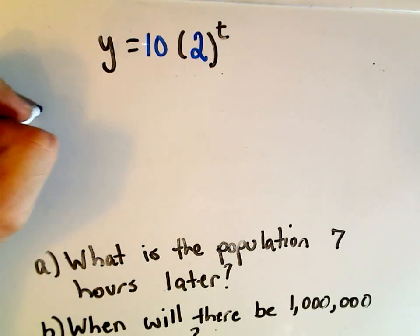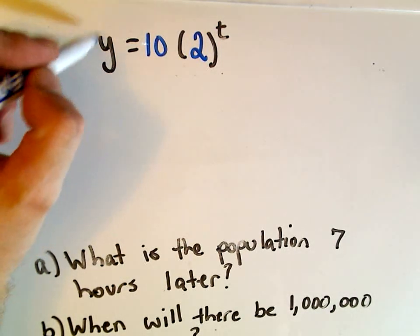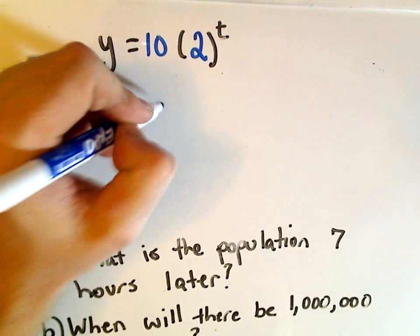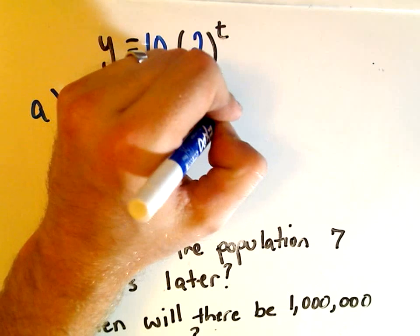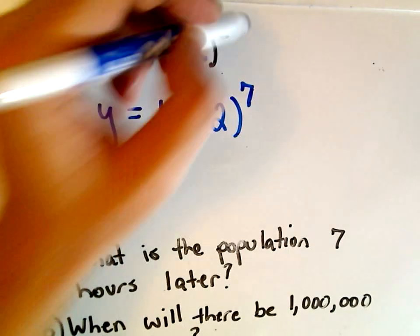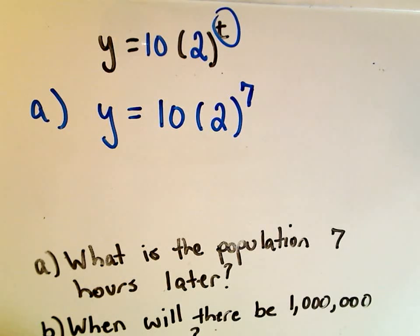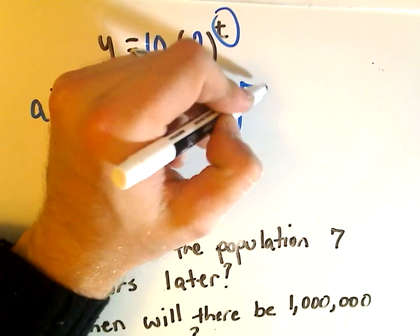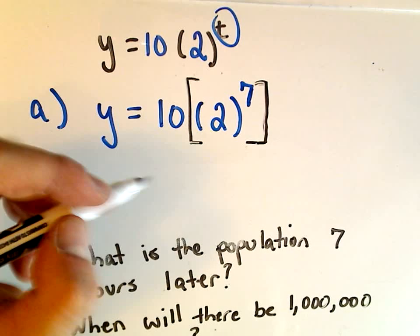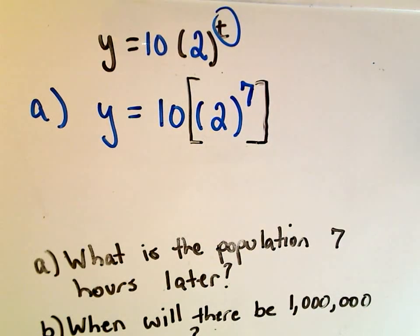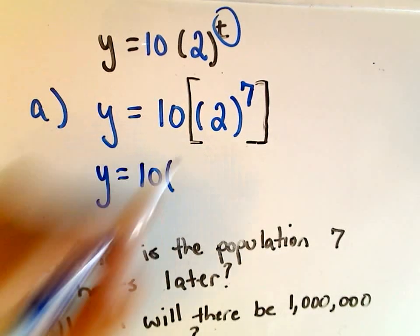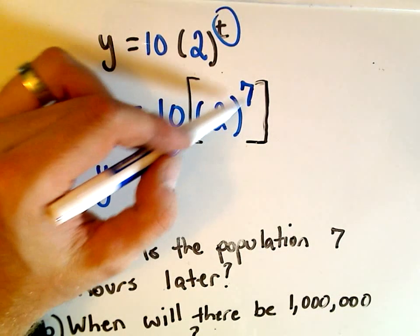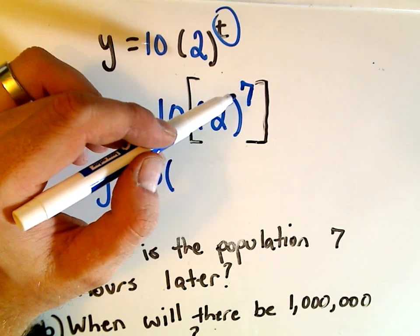So part a, it says what is the population seven hours later? Y represents the total amount seven hours later. Well I have to plug my t value in as a seven. Here's another place where people will sometimes make mistakes and you have to be careful not to do this. You have to remember your order of operations. Some people will make the mistake of multiplying the ten and the two, but remember that's not what you want to do. We have to take the value two raised to the seventh power. Make sure you do that first. Make sure you hit your exponent key on your calculator. You don't want 14, we're not multiplying here, we're doing an exponent.